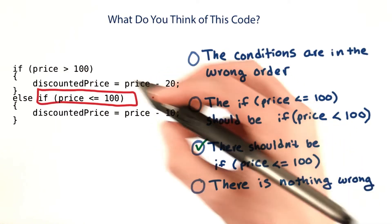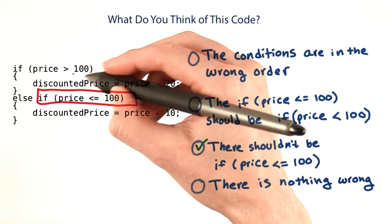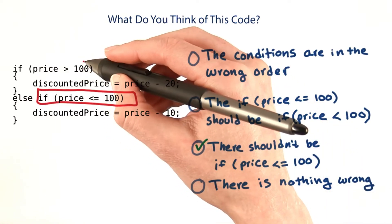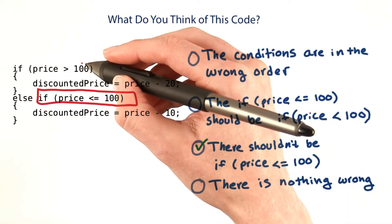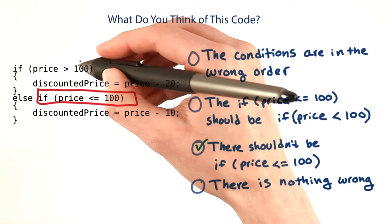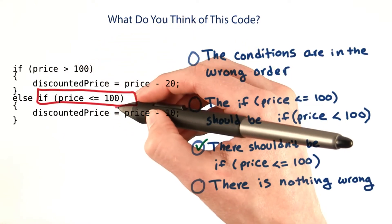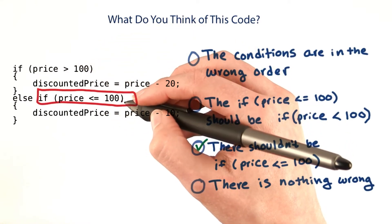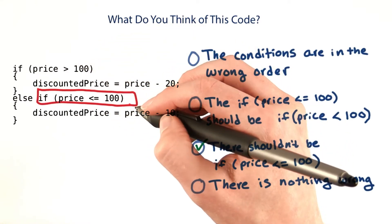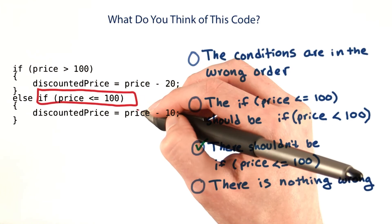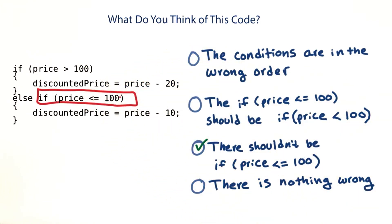We could later decide that we want to change the threshold of 100, and then we would have to remember to change it in both places. We're creating extra work and unnecessary complexity for ourselves by adding unnecessary code.